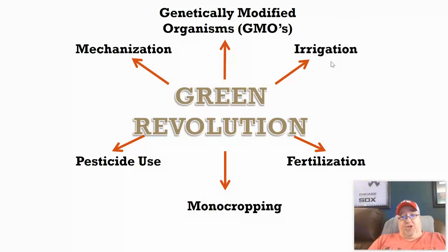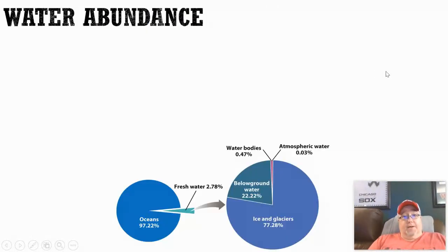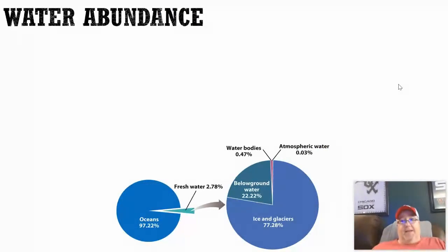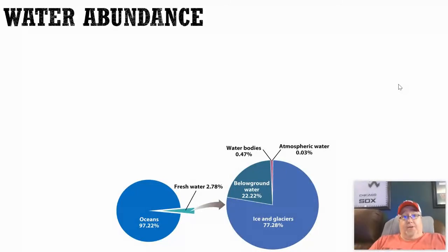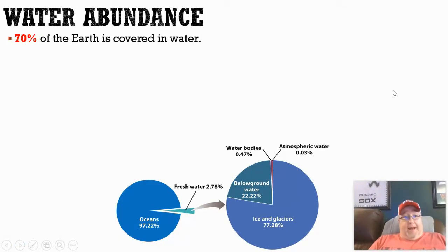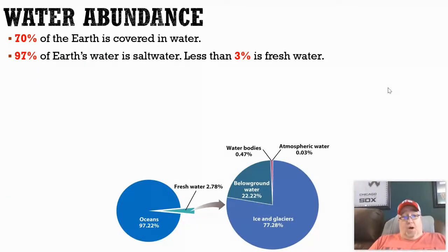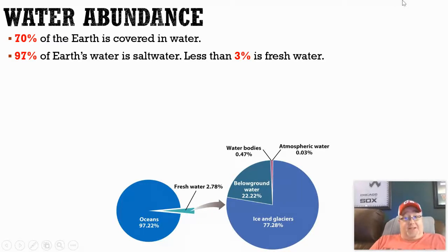Before we get into irrigation — because most of us understand it involves the use of water — I want to talk a little bit about water first. There's a lot of water on our planet: 70% of the earth is covered in water. But 97% of all the water on our planet is salt water, which means it's basically undrinkable. Less than 3% of all the water on our planet is freshwater.